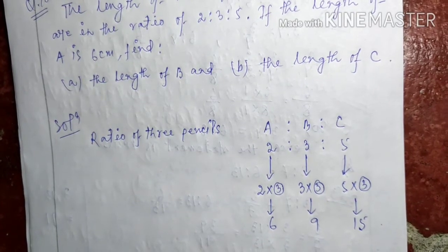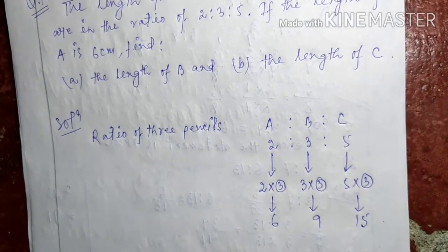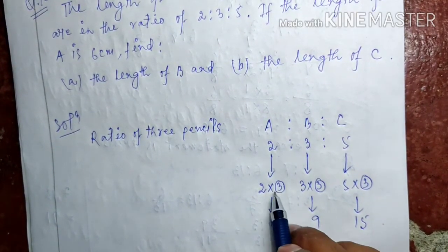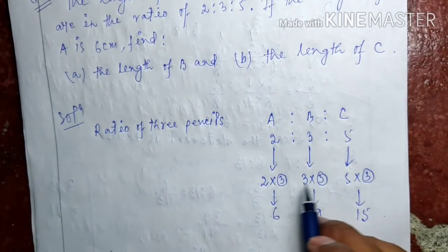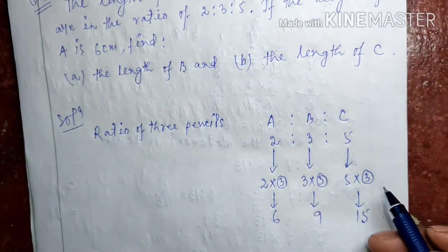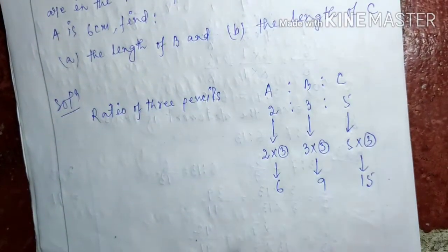This is for converting into equivalent ratios. If you multiply any number with a number, same number should be multiplied to other ratios as well.